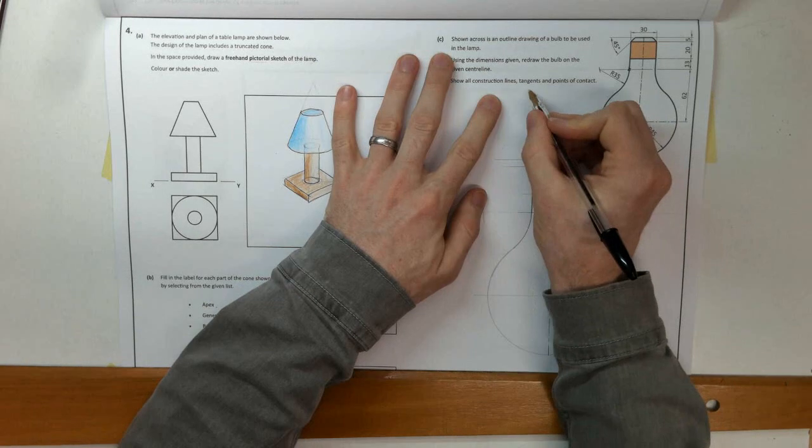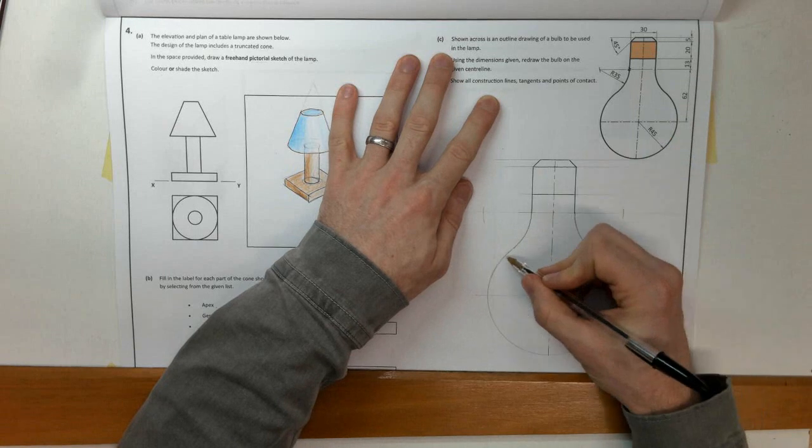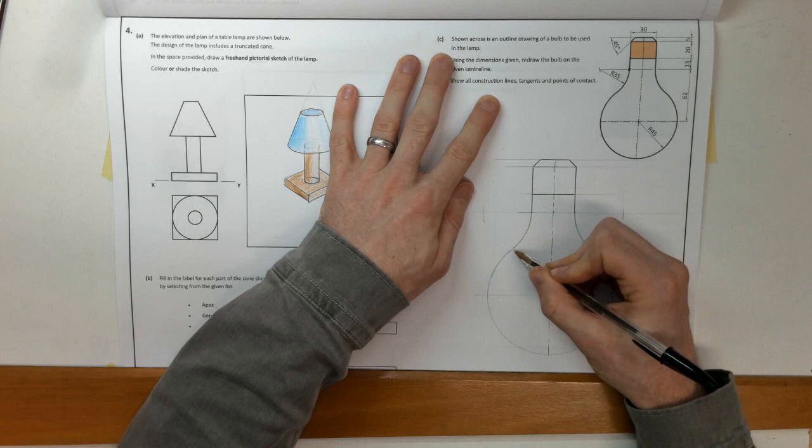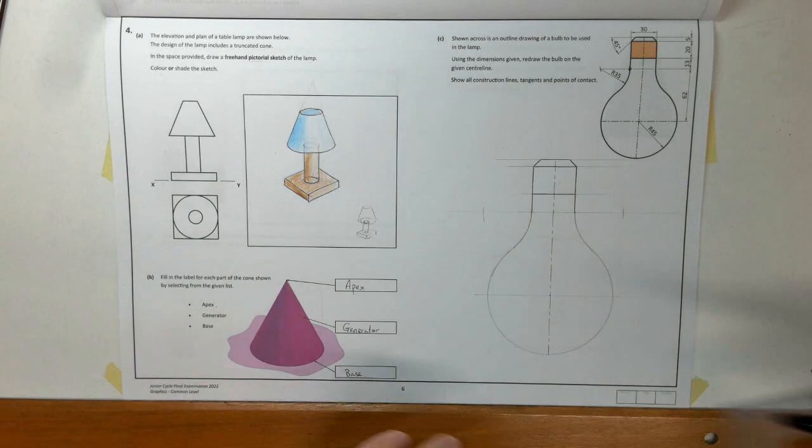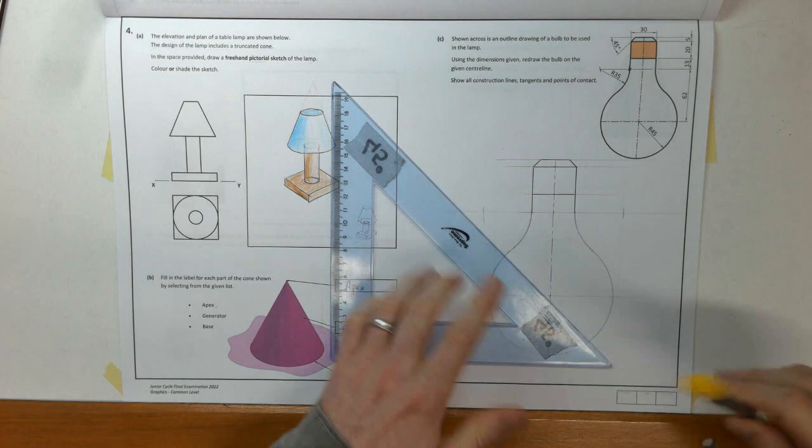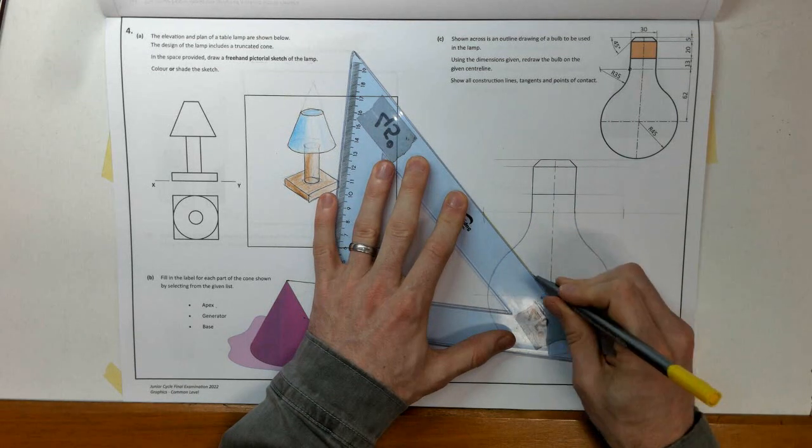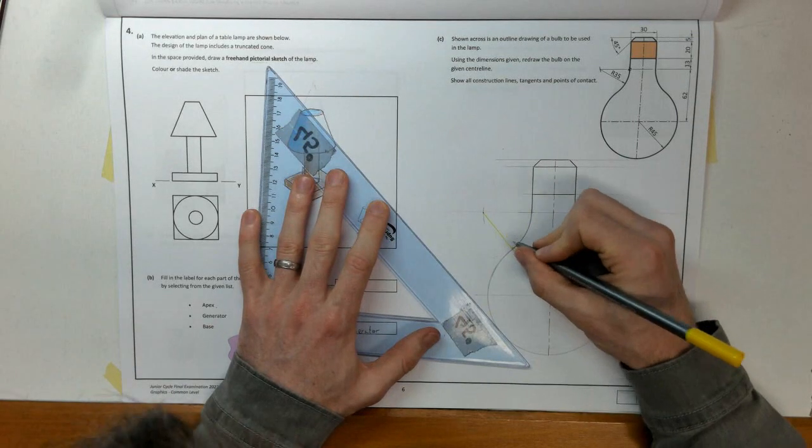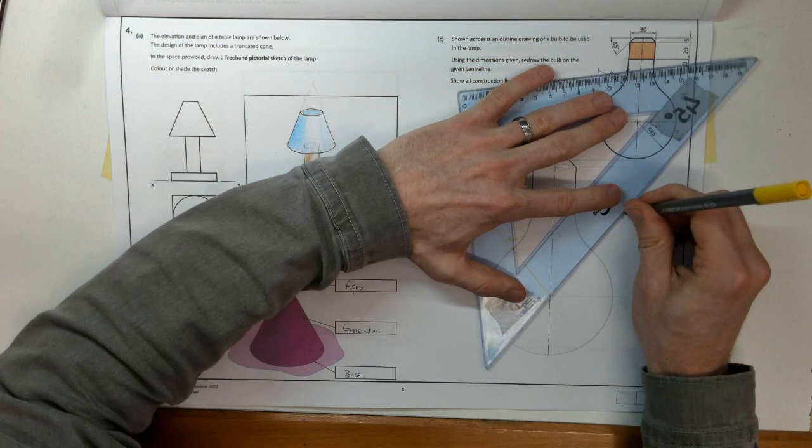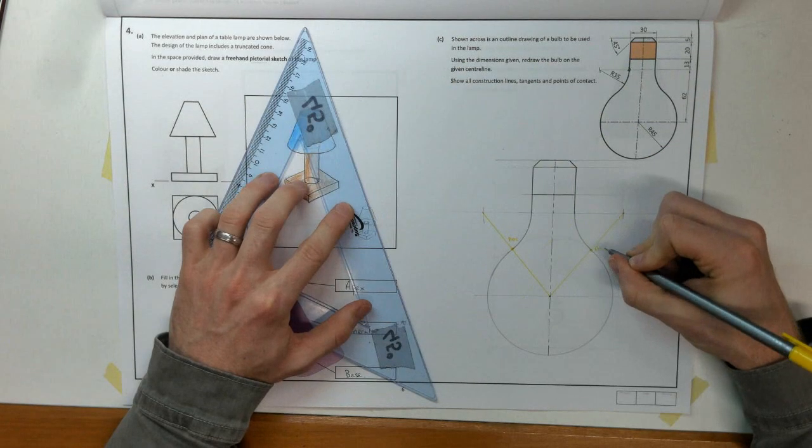So we've shown our construction tangents and points of contact. So these two circles, we need to find the exact point of contact between them. So that is done by joining the centers. I'll just use a colored pen here to show that. From center to center. So right here, that is my POC point of contact. The same on the opposite side. Up there is my POC point of contact.